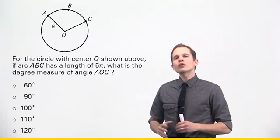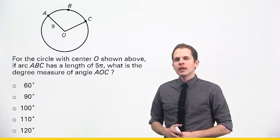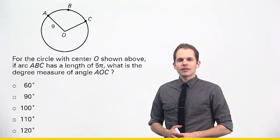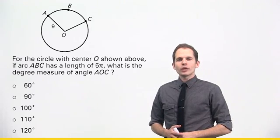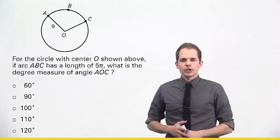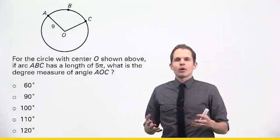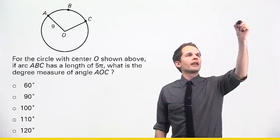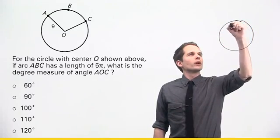This question says, for the circle with center O shown above, if arc ABC has a length of 5π, what is the degree measure of angle AOC? So this is a geometry question. I want to follow the geometry basic approach. Step one of that is to draw out the figure that they give you. They don't give you one, you add your own.